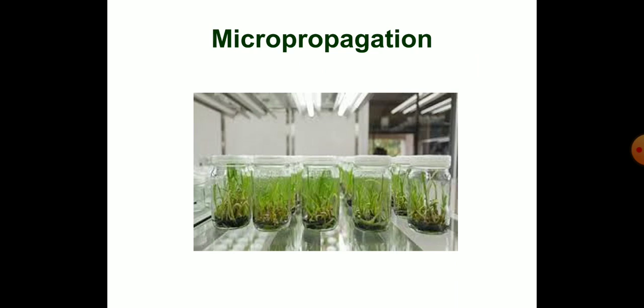Micropropagation is a process that has been successfully applied for the propagation of potato, apple, and some ornamental plants.